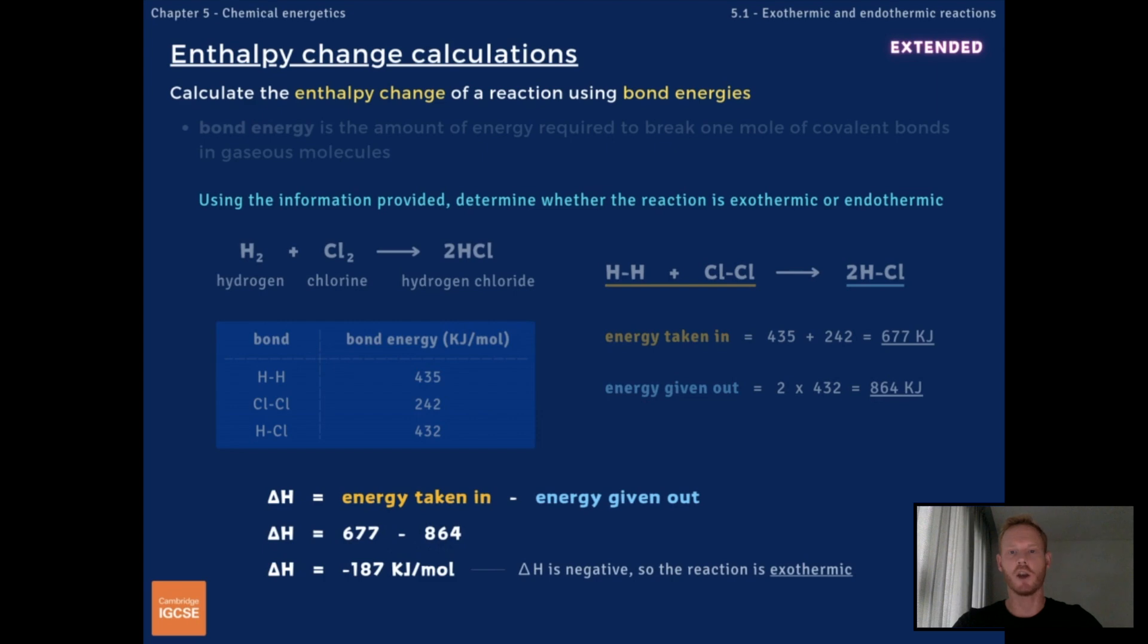The answer, minus 187 kJ per mole, tells us that when 1 mole of hydrogen reacts with 1 mole of chlorine to form 2 moles of hydrogen chloride, 187 kJ of energy is given out to the surroundings.